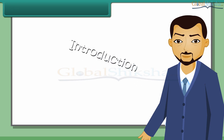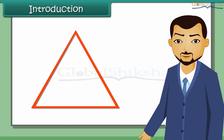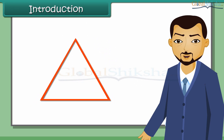A triangle has six parts: three sides and three angles. But to construct a triangle, you need to know only three parts. So we can construct a triangle using the SAS, ASA, SSS, and RHS axioms.